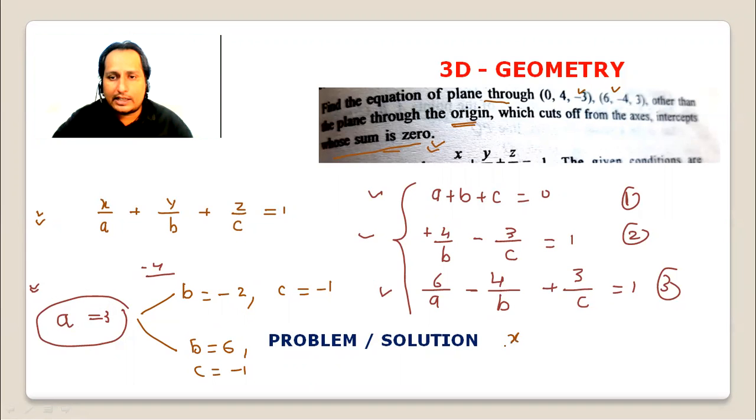So two planes are possible. One plane has x/3 - y/2 - z/1 = 1, and the other plane has x/3 + y/6 - z/1 = 1. These two planes are possible. One triplet is (3, -2, -1) and the other triplet is (3, 6, -9).